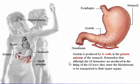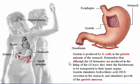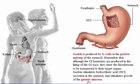Although the GI hormones are produced in the lining of the GI tract, they enter the bloodstream to be transported to their target organs. Gastrin stimulates hydrochloric acid secretion in the stomach and stimulates growth of the gastric mucosa.